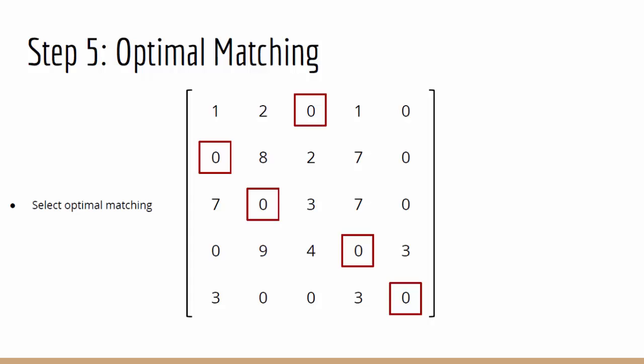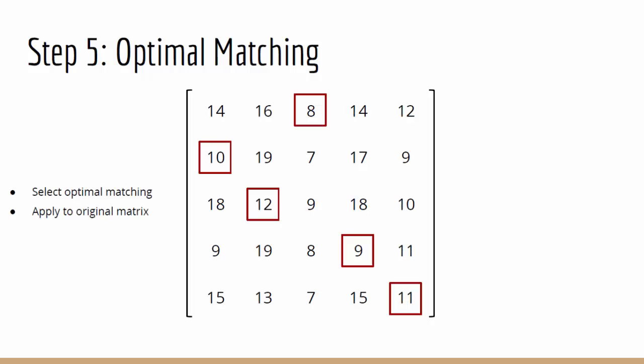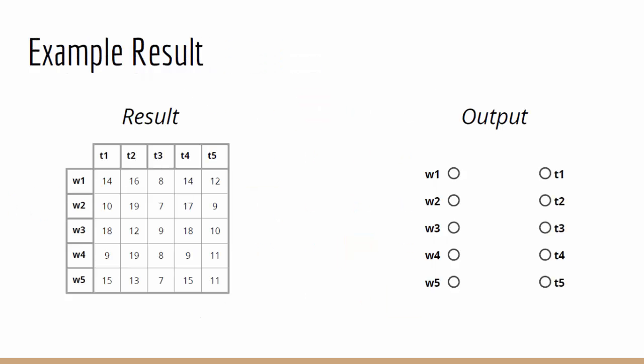Now that we have our matching, we can apply it to our original matrix. Finally, we can output our new matching to a bipartite graph, with worker 1 assigned to task 3, worker 2 assigned to task 1, worker 3 assigned to task 2, worker 4 to task 4, and worker 5 to task 5. This is an optimal matching. Adding these up gives us a total minimum cost of 50.